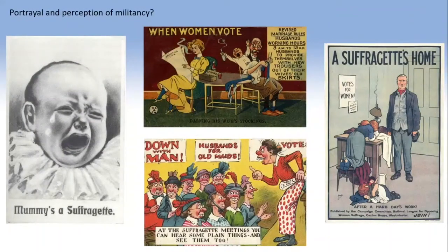Moving on to the second theme of this mini lecture: the portrayal and perception of militancy. It's important to consider how people at that time understood and perceived militancy during the Edwardian period. Here, for example, is a series of anti-suffragette postcards produced in large numbers during the Edwardian period — very collectible even today — offering a very unfavourable portrayal of suffragette militancy, clearly intended to undermine and destroy that campaign.